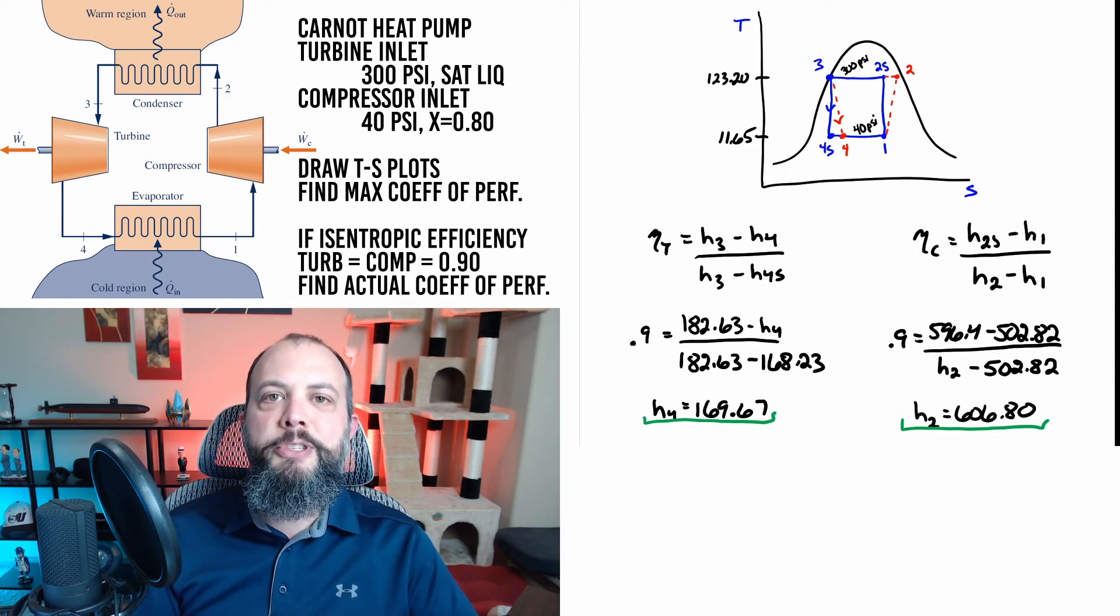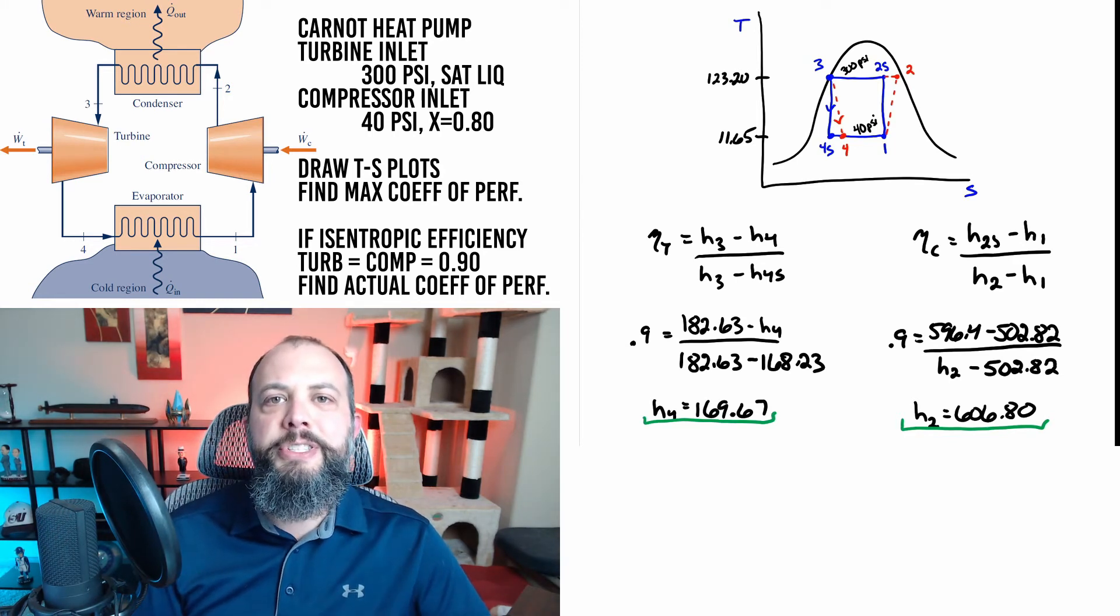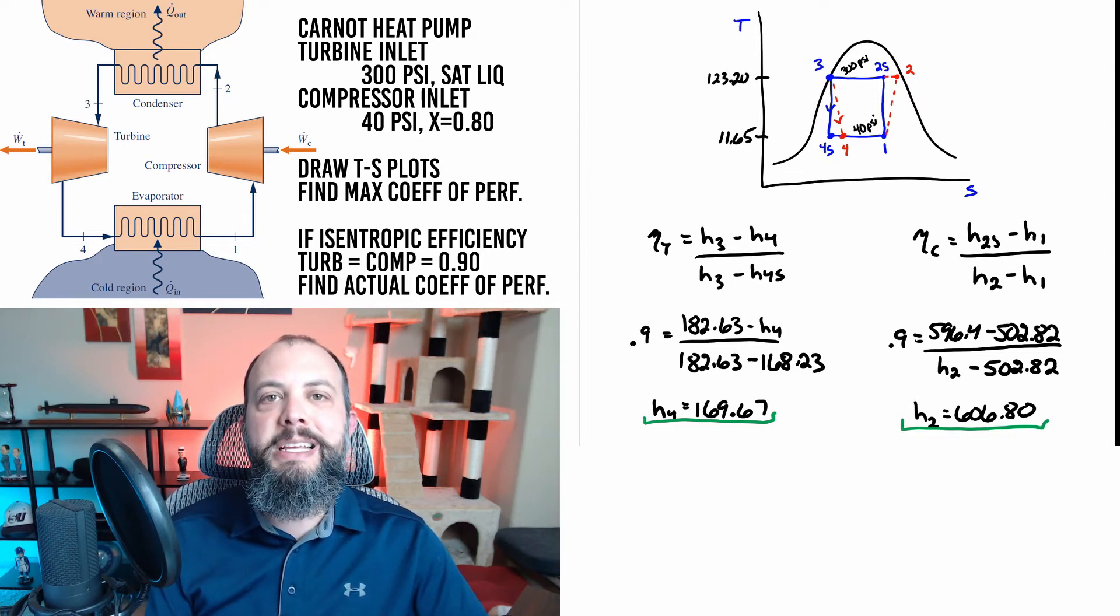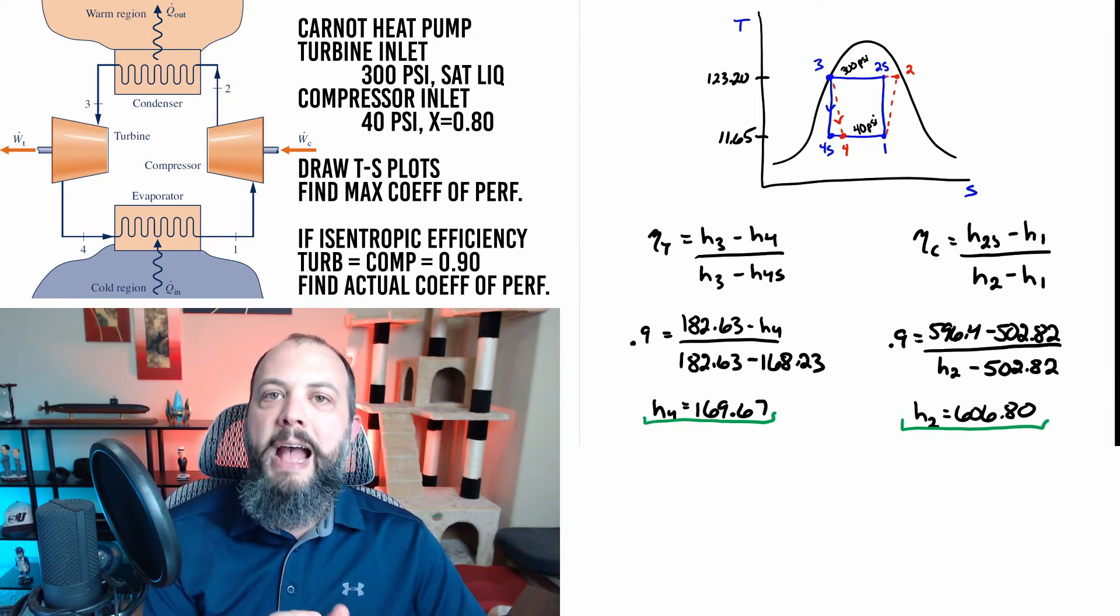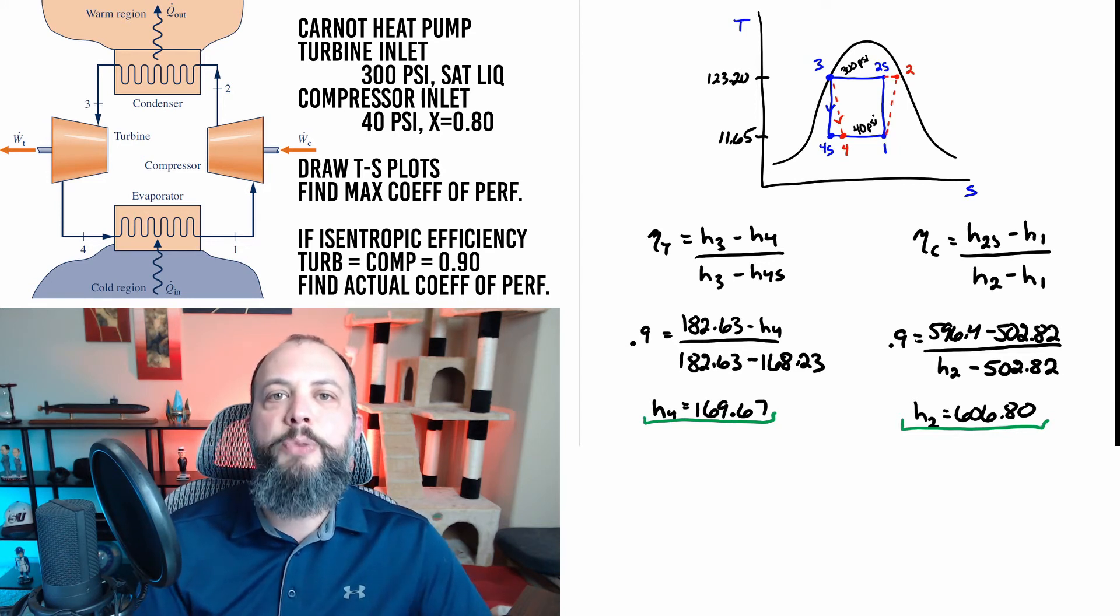For a turbine the maximum possible performance is when there are no irreversibilities and then once irreversibilities are added the work decreases. In order for efficiency to be a number less than one the larger work value which is the maximum work would have to be in the denominator. So that's why the s term is in the denominator for the turbine that's the maximum possible work and then the smaller amount of actual work will be the numerator and then the fraction will be a quantity between zero and one.